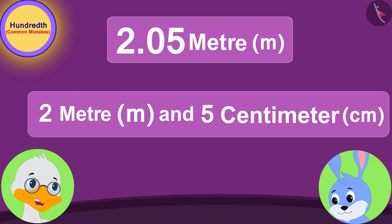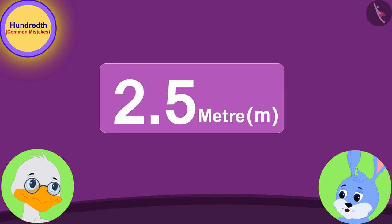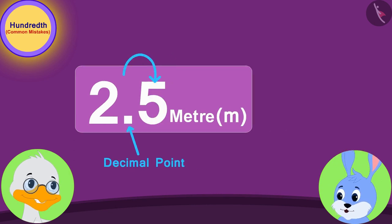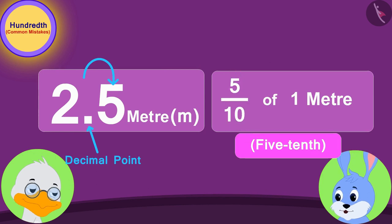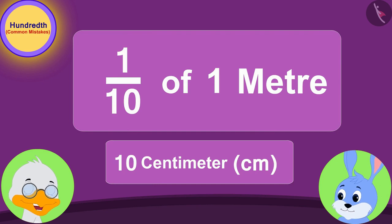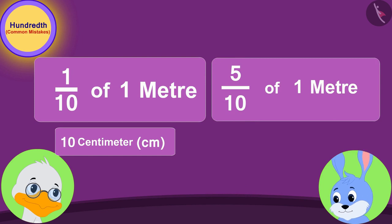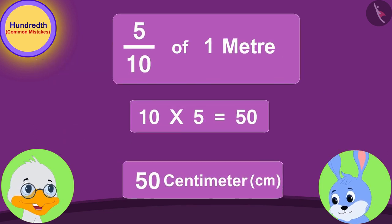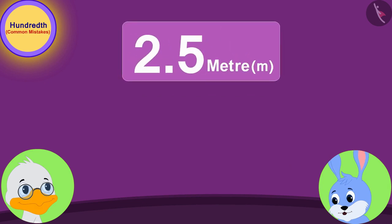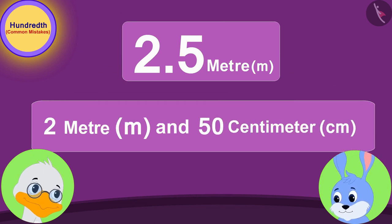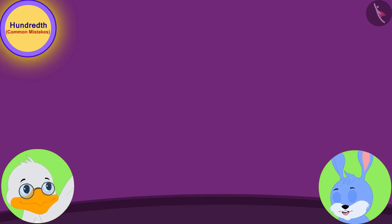Uncle continued: "In the same way, in 2.5 meters, the number after the decimal is 5, which is the 5 tenths part of a meter. One tenth part of a meter is equal to 10 centimeters. Therefore, the 5 tenths part of a meter will be equal to 10 times 5, or 50 centimeters. Thus, 2.5 meters is equal to 2 meters and 50 centimeters."